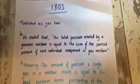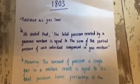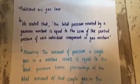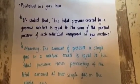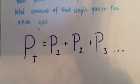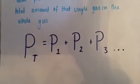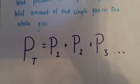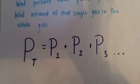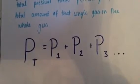In 1803, Dalton published his Gas Law, also known as Dalton's Law. This stated that the total pressure exerted by a gaseous mixture is equal to the sum of the partial pressures of each individual component in that gas mixture. This shows that the total pressure equals the partial pressure of the first gas, plus the second gas, plus the third gas.